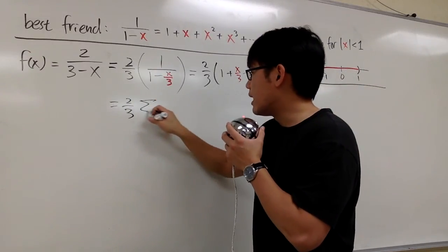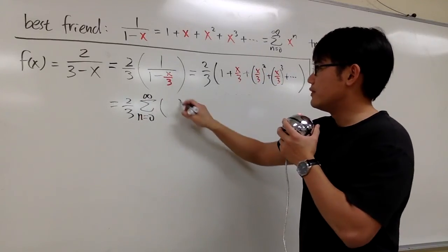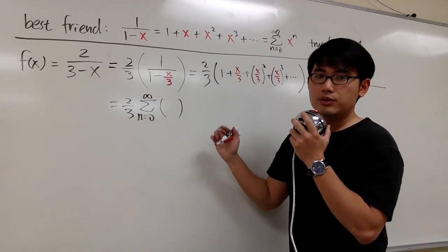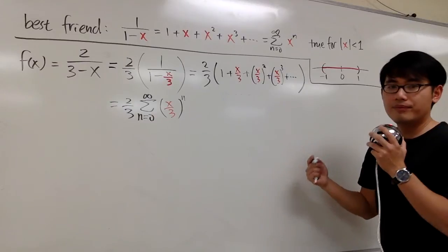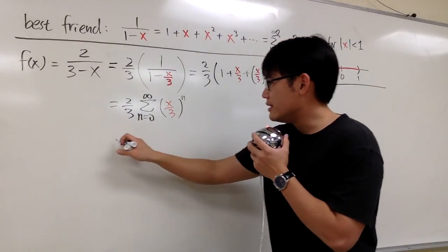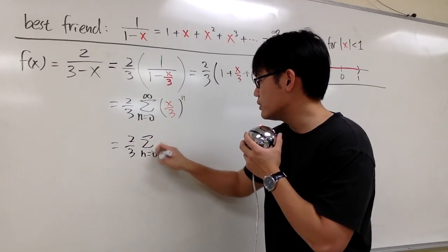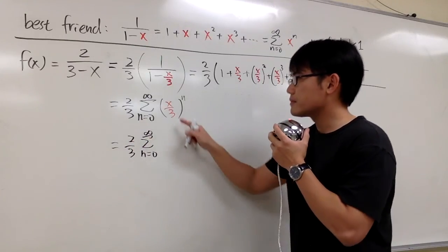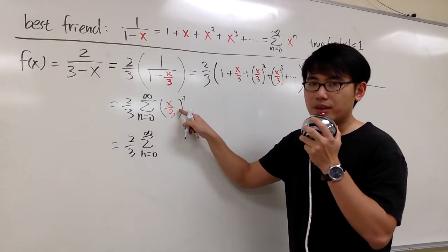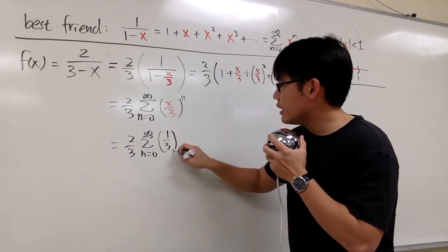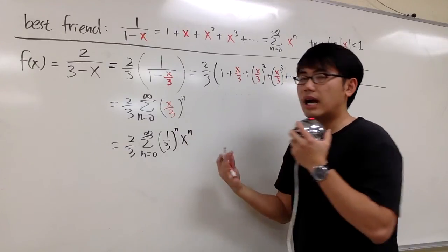So we have sigma when n goes from 0 to infinity. And I will open the parenthesis first, and then plug in x/3, and then raised to the nth power. And then I will work with the exponent right here. This is the same as 2/3 sigma when n goes from 0 to infinity. This is like 1/3 times x inside the parenthesis. So we have (1/3)^n first, and I will put down x^n on the side.